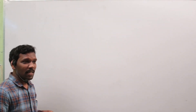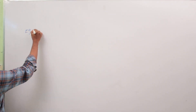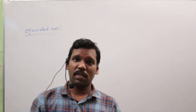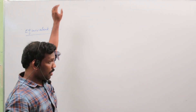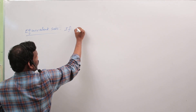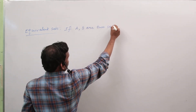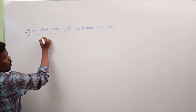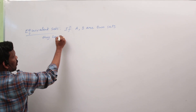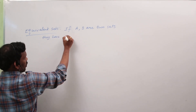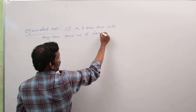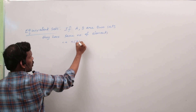Now we discuss equivalent sets. If A and B are two sets, they are said to be equivalent if N of A is equal to N of B. That is, if A and B are two sets, they have different elements but the same number of elements, i.e., N of A is equal to N of B.